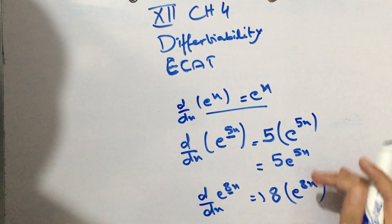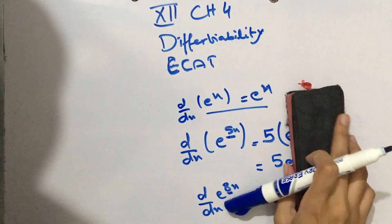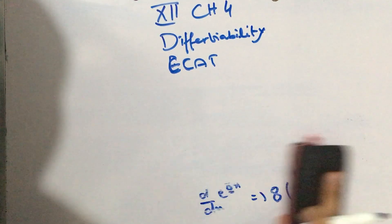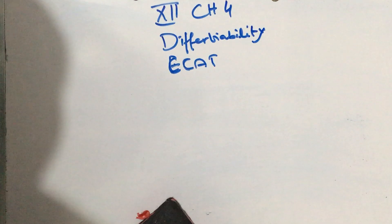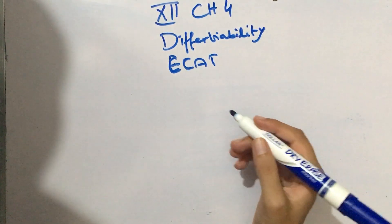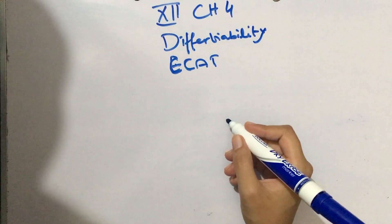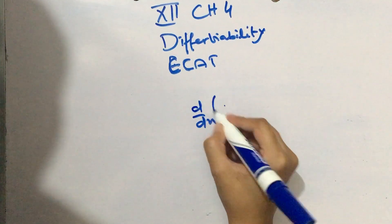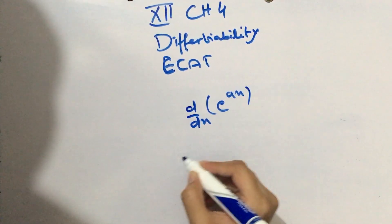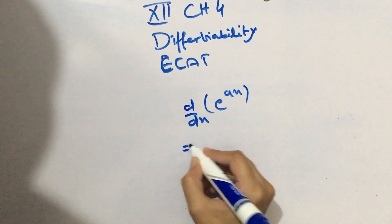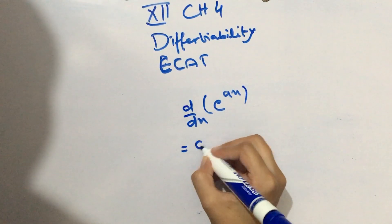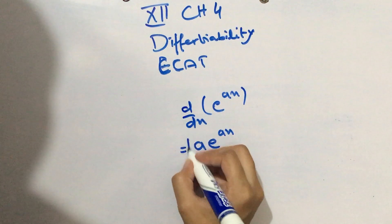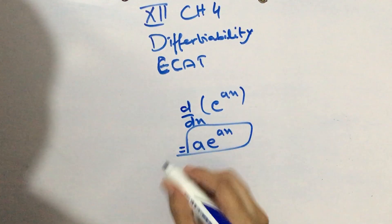This is a very important concept — differentiation of exponential functions. If the exponent is simply x, then the derivative is e^x as it is. If there is a coefficient, for example d/dx of e^(ax), we multiply the coefficient a out front and keep the function the same, giving a·e^(ax).